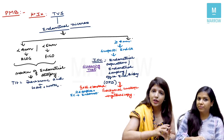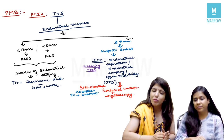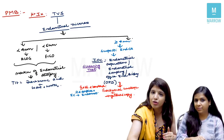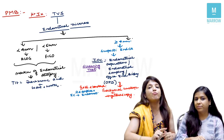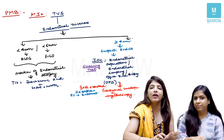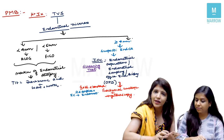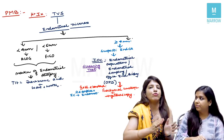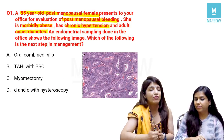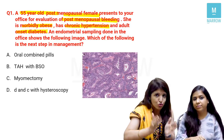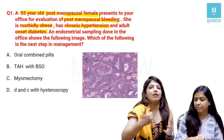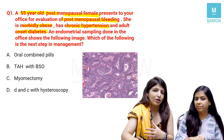A common mistake students make: in a post-menopausal female with bleeding, an ultrasound must be done before endometrial biopsy — but this rule does not apply to a perimenopausal female with AUB. In this patient, a TVS would have been done, and if endometrial thickness was ≥4 mm, endometrial sampling would follow — which is exactly what was done.